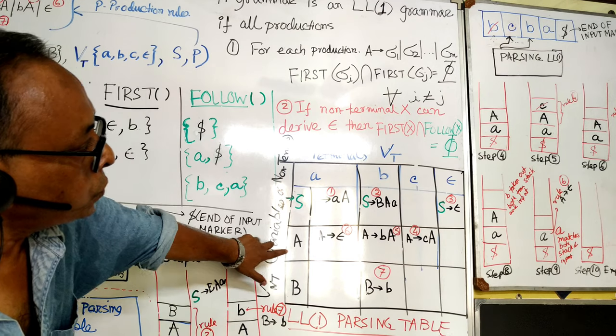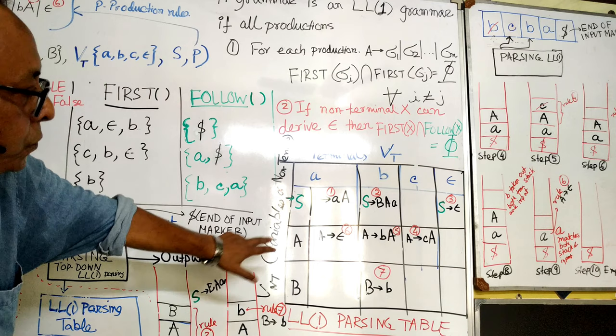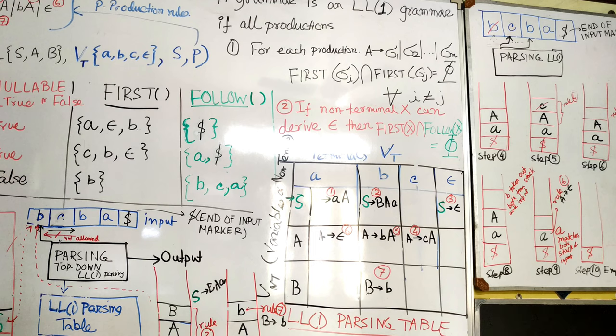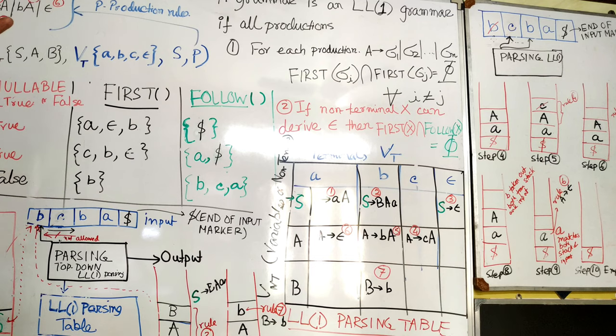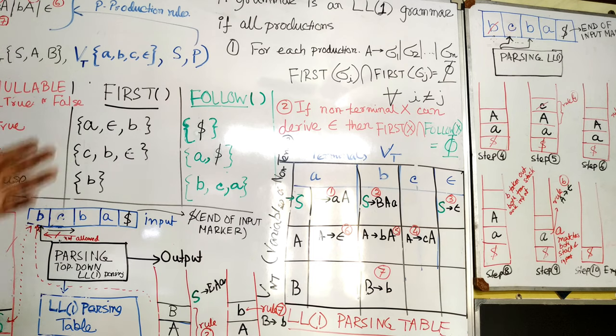We can see here C. Because B is removed, B is taken out, then A and A are there. Step 4. Then we have to match A, now input is C. A to C, the rule number is rule number 4: A to small c and A. So we replace that. Now see, at the top of the stack C matches this C, so it will be taken out. Now the stack position is step number 6. Stack contains only capital A at the top and small a, and end of stack marker dollar.